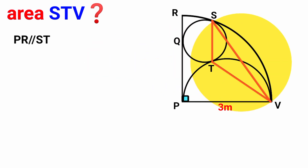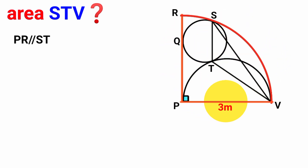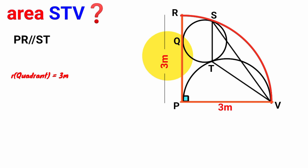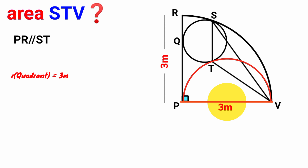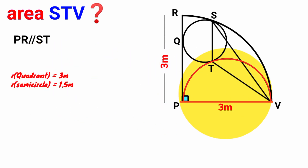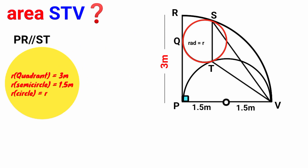Starting from this quadrant, we can see this side has its length to be three meters, so the radius of the quadrant equals three meters. This side will also be three meters in length because it is also a radius of the quadrant. This is a semicircle, so line PV will be its diameter. Since diameter equals two times radius, the radius of the semicircle is one-half of three meters, which is 1.5 meters. We assume the small circle's radius to be r.